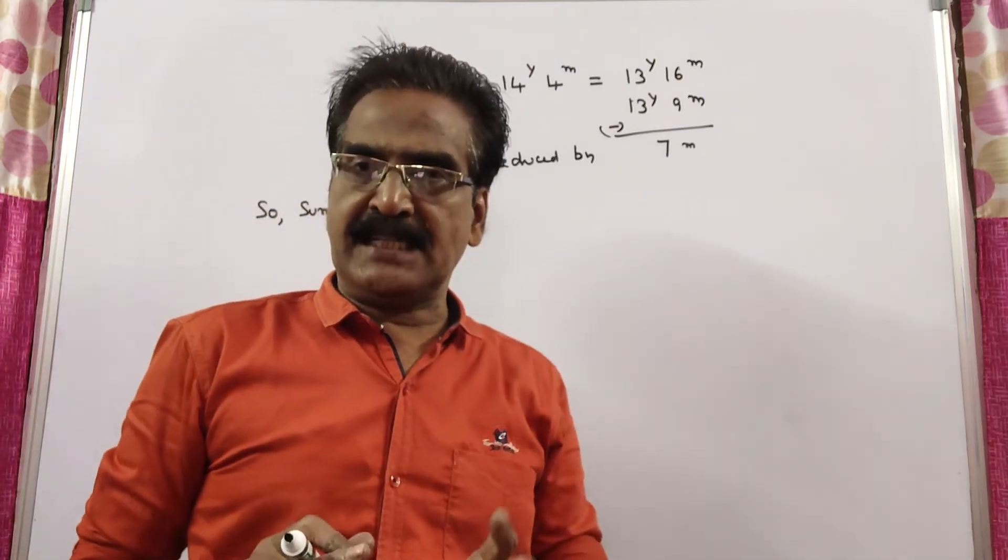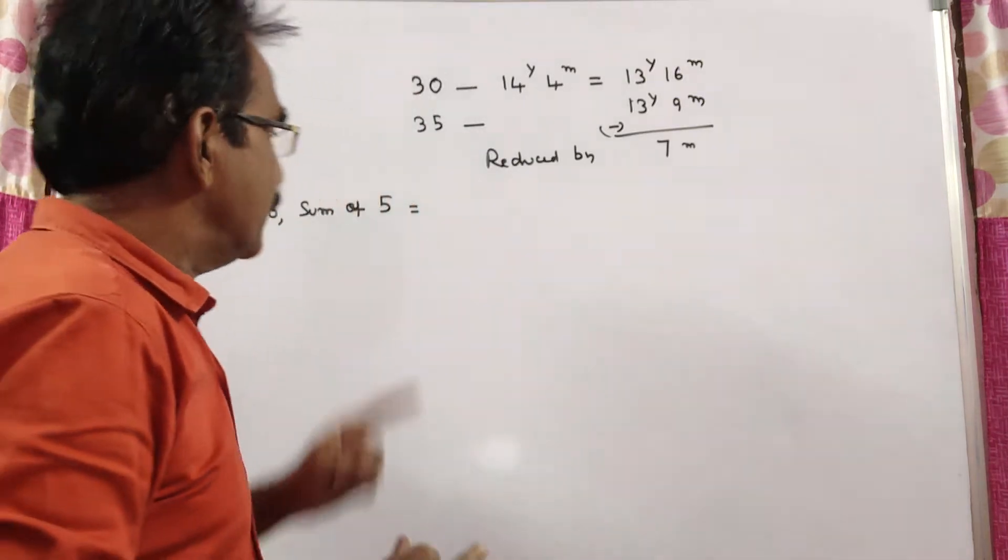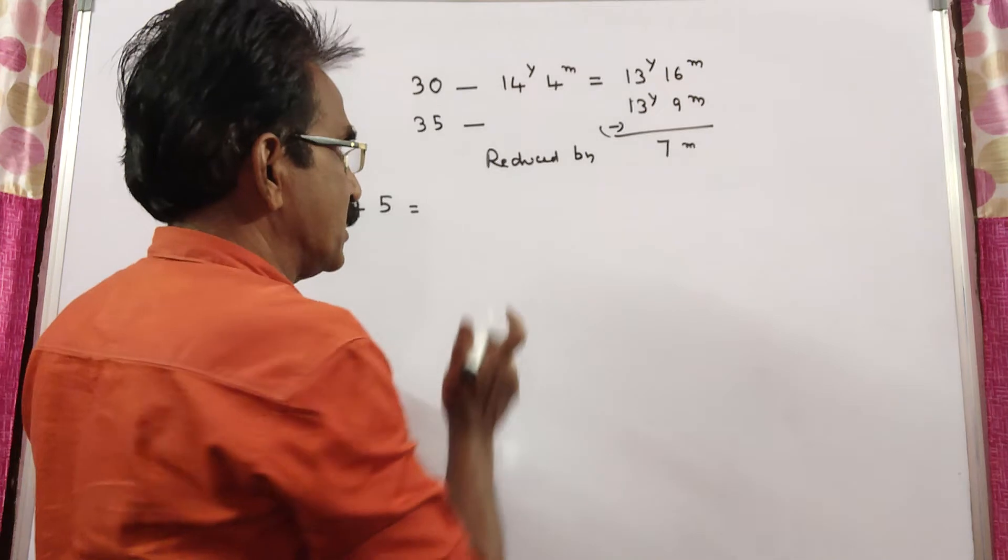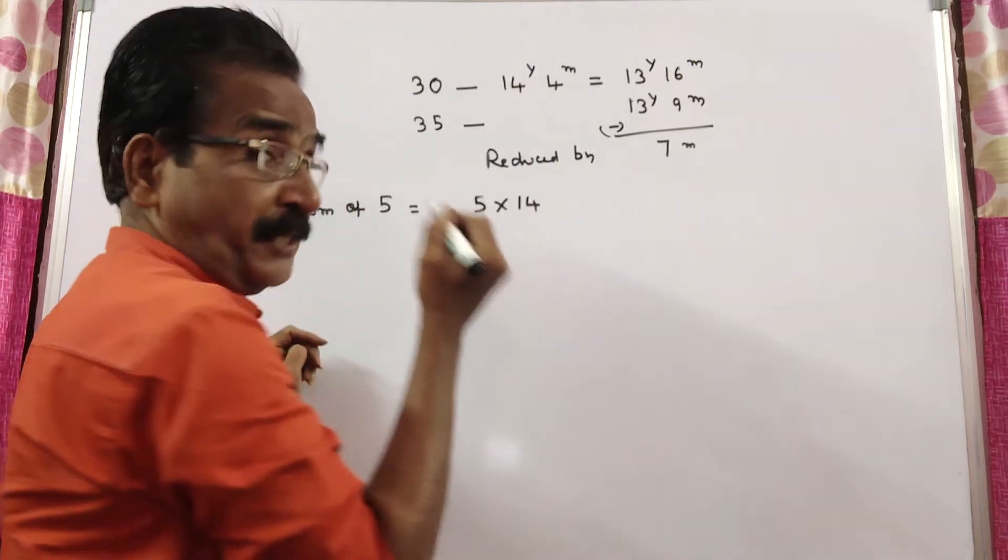So, the sum of the ages of 5 students must be... the sum of the age of 5 students must be. And here, average duration was 14 years, 4 months.